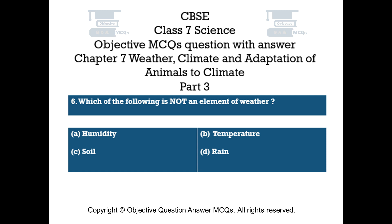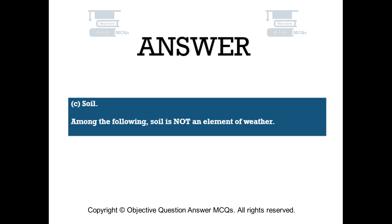Question number 6. Which of the following is not an element of weather? Option A: Humidity. Option B: Temperature. Option C: Soil. Option D: Rain. The right answer is Option C — Soil. Among the following, soil is not an element of weather.